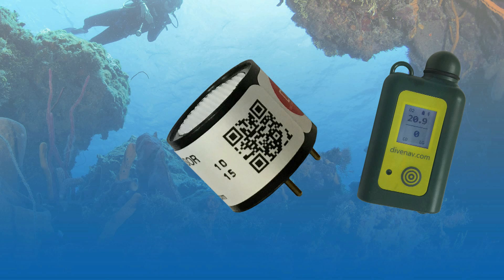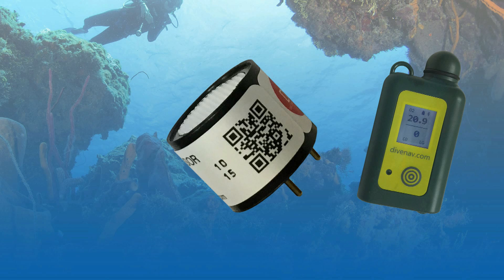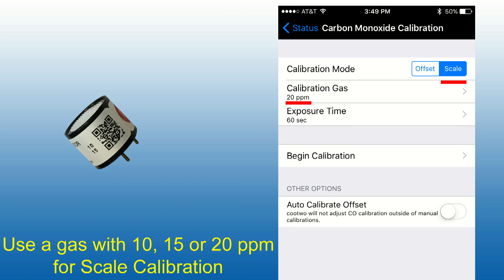The calibration of the carbon monoxide sensor requires the use of two different reference gases. A reference gas containing zero ppm is required to set the offset value, and a reference gas with either 10, 15, or 20 ppm is required to set the scale value.